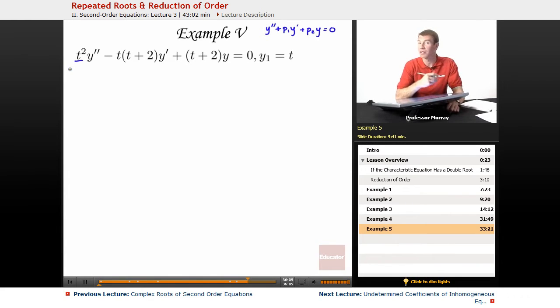So again, I'm going to divide that coefficient away so that we'll get the right form to invoke our formula for reduction of order. So I'll get y'' - t(t+2)/t² y' + (t+2)/t² y = 0. If I divide the right-hand side by t², it's just still 0.